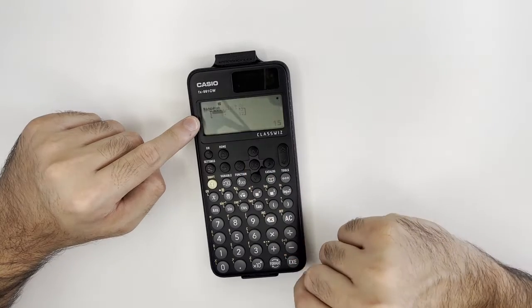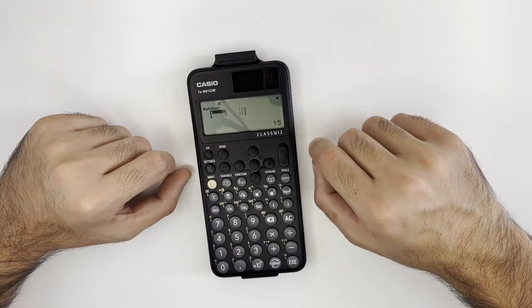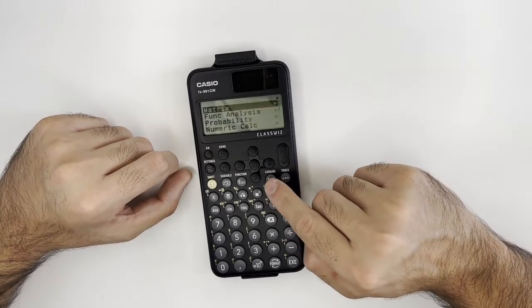Then execute. Here we're simply adding matrix A and matrix B. Now, don't forget to press the Catalog button.